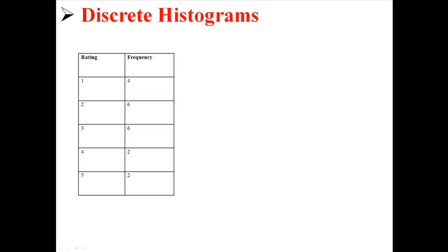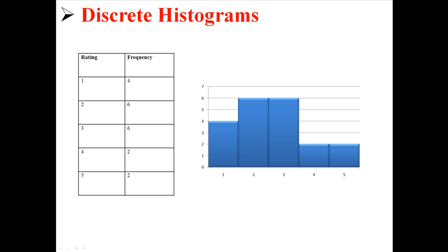We're going to organize that into a frequency table. You see that we have 4 ones, 6 twos, 6 threes, 2 fours, and 2 fives. So it's just like creating a bar graph, except now it's a histogram and the bars are touching. And that is a histogram for discrete data.